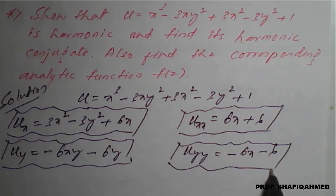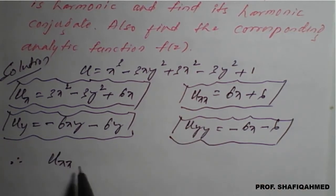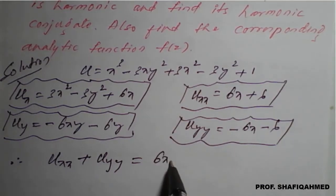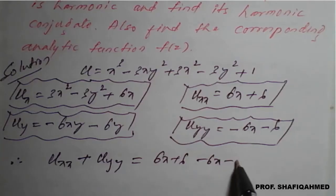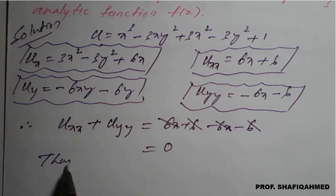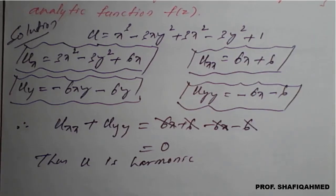Now we check the harmonic condition. The relation for harmonic is uxx + uyy = 0. We have uxx = 6x + 6 and uyy = -6x - 6. Adding: 6x - 6x = 0 and 6 - 6 = 0, so uxx + uyy = 0. Thus u is harmonic. The first part of the problem is completed.